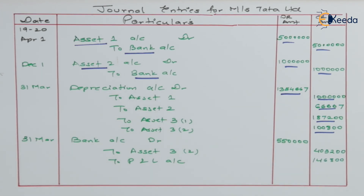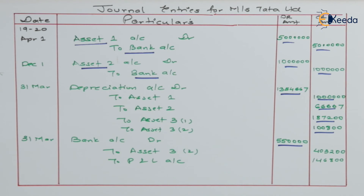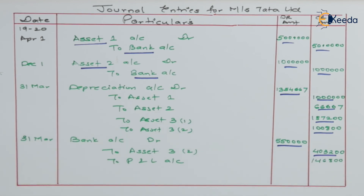The fourth journal entry is the sale entry: bank account debit to asset three account and to profit and loss account. Bank account is debited with 5 lakh 50,000 as that is the sale price. Asset three part two is credited with the written down value of that specific asset as of 19-20, which is 4 lakh 3,200. Profit and loss account is credited with 1 lakh 46,800 — the profit on this transaction. Now that we have completed all journal entries, we figure out the value of all assets held as of 31st March 2020.